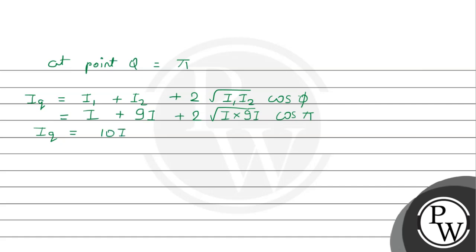That gives us 10I + 2√(9I²) × cos π. The value of cos π is -1, so solving further we get 10I - 6I, which equals 4I.